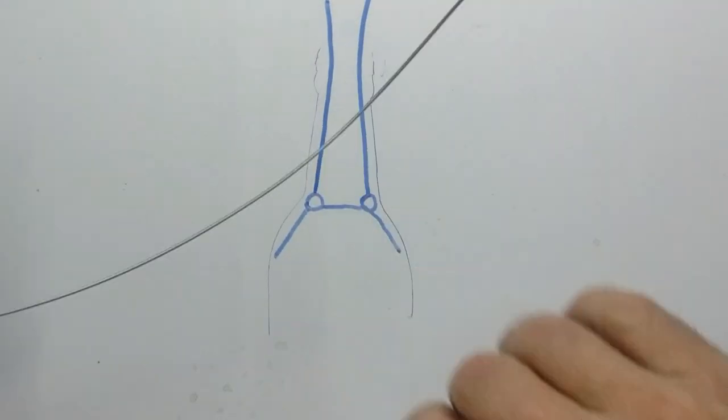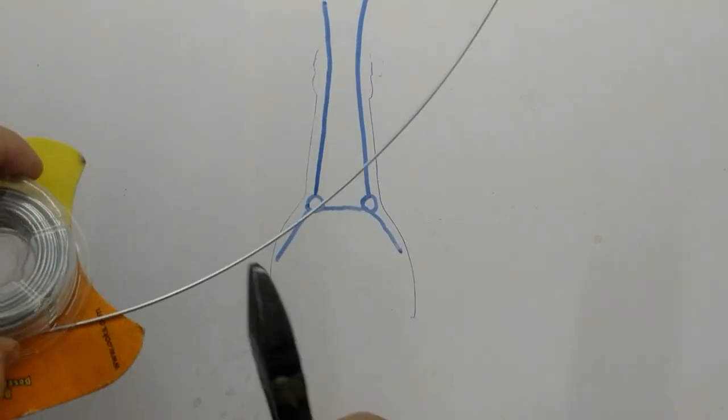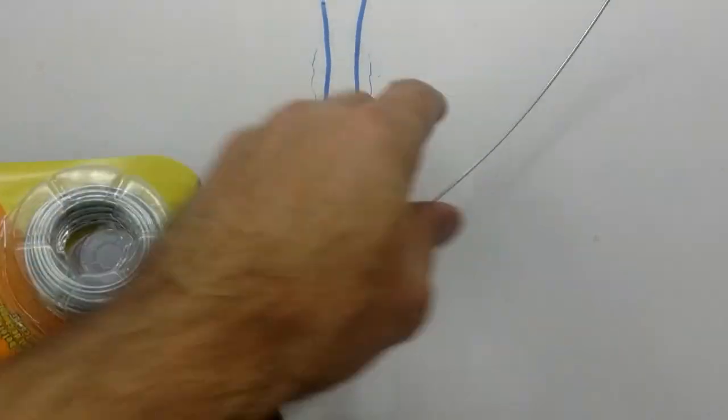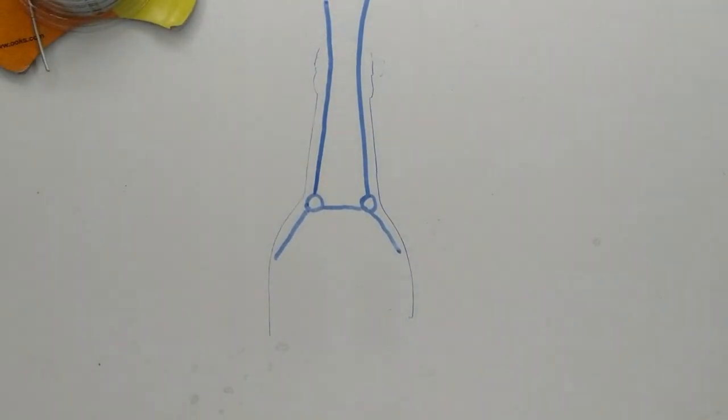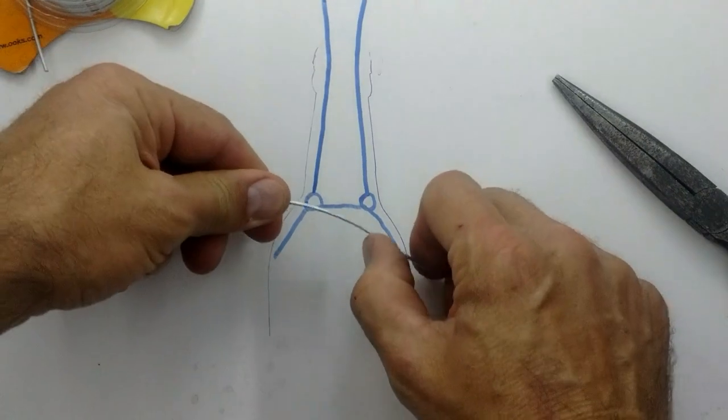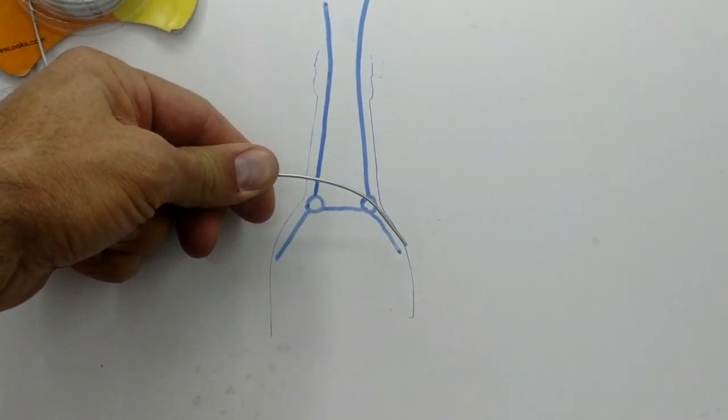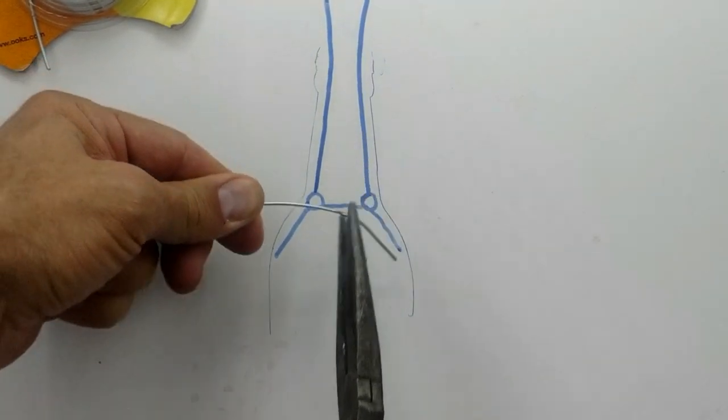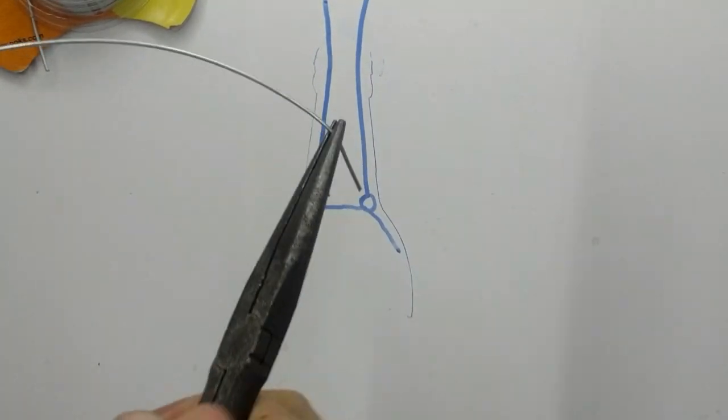I'm using 16 gauge wire. I cut off a length of wire, not really measuring how long it is. Using needle nose pliers, I bend the wire into the basic pattern.